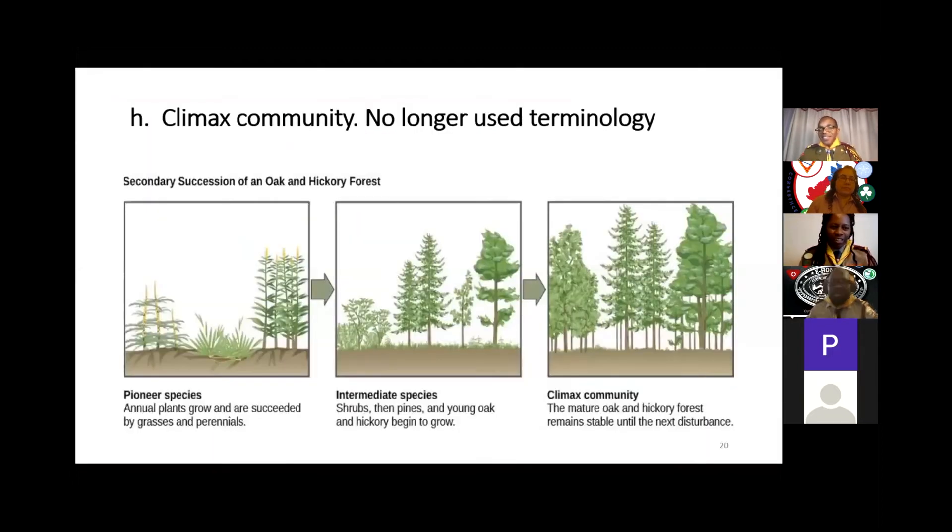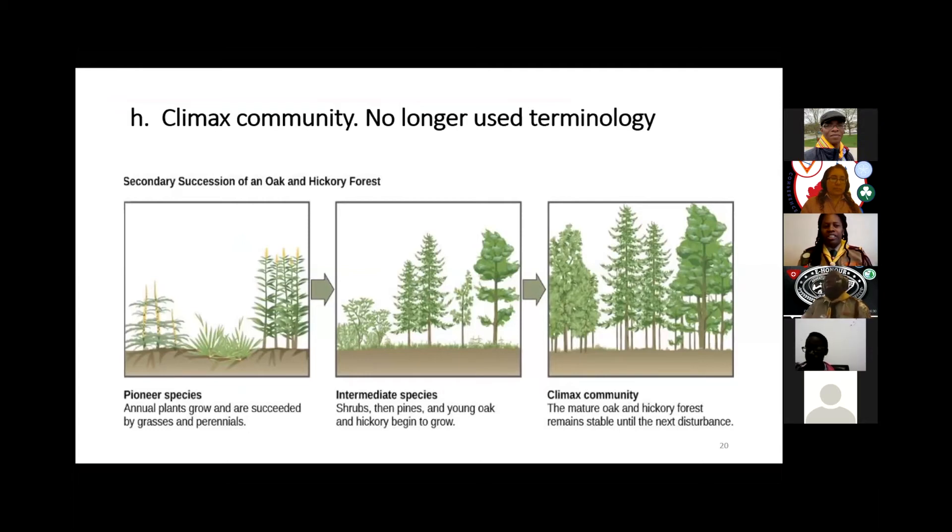Climax community: This term isn't really used much anymore, as ecologists have found the theory difficult to apply. However, the term is used to express a community in its final stage of succession. As you can see in the diagram, in the first picture the plant grows yearly and is succeeded by grasses and perennials. In the second picture we see the shrubs, pines, and young oak and hickory beginning to grow, and with time they become mature and stable as seen in the third picture, until the next disturbance occurs to restart the cycle.